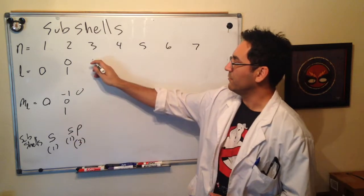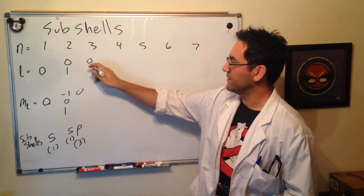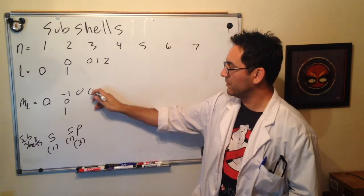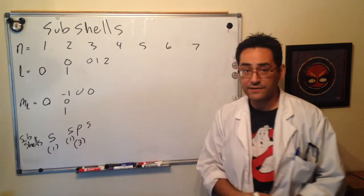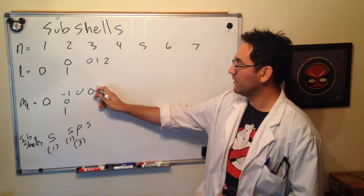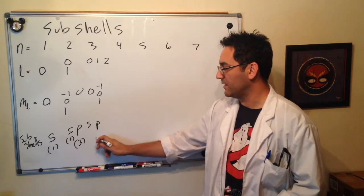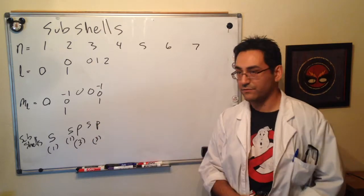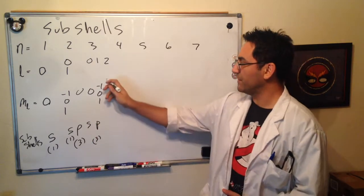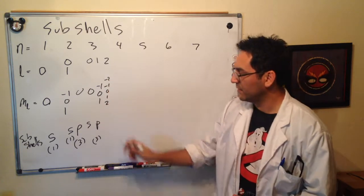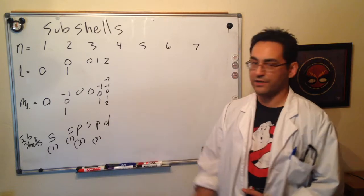Okay. n equals 3. We get 0, 1, and 2. Well, 0, 0 gives us s. 1, minus 1, 0, plus 1 gives us p. And there's three of those. And then 2 gives us minus 2, minus 1, 0, 1, and 2. Of which we call that a d shell.